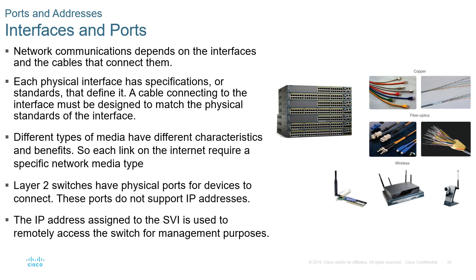Network communications depend on interfaces and the cables connecting them. Each physical interface has standards defining it, and cables must match those physical standards. Different types of media have different characteristics and benefits — examples include copper, fiber, and wireless. Layer 2 switches have physical ports for connecting devices, but these ports do not support IP addressing. Instead, an IP address is assigned to the switch virtual interface, which is used to remotely access the switch for management purposes.